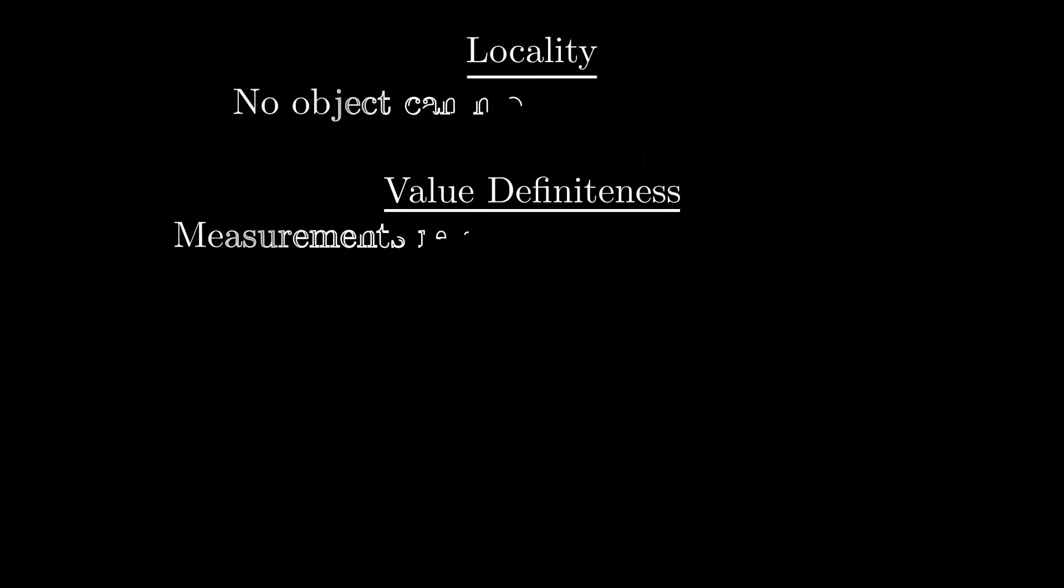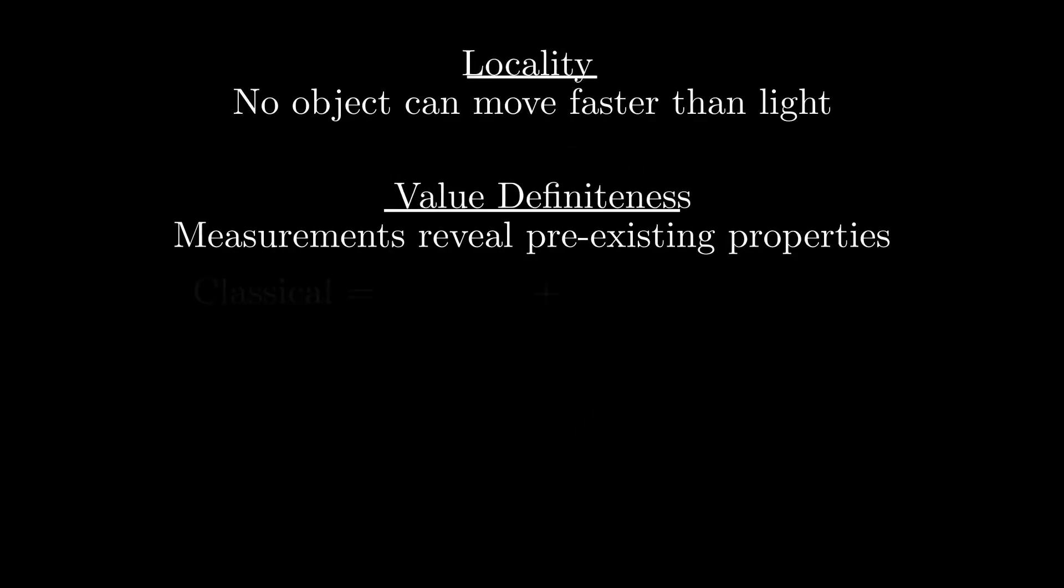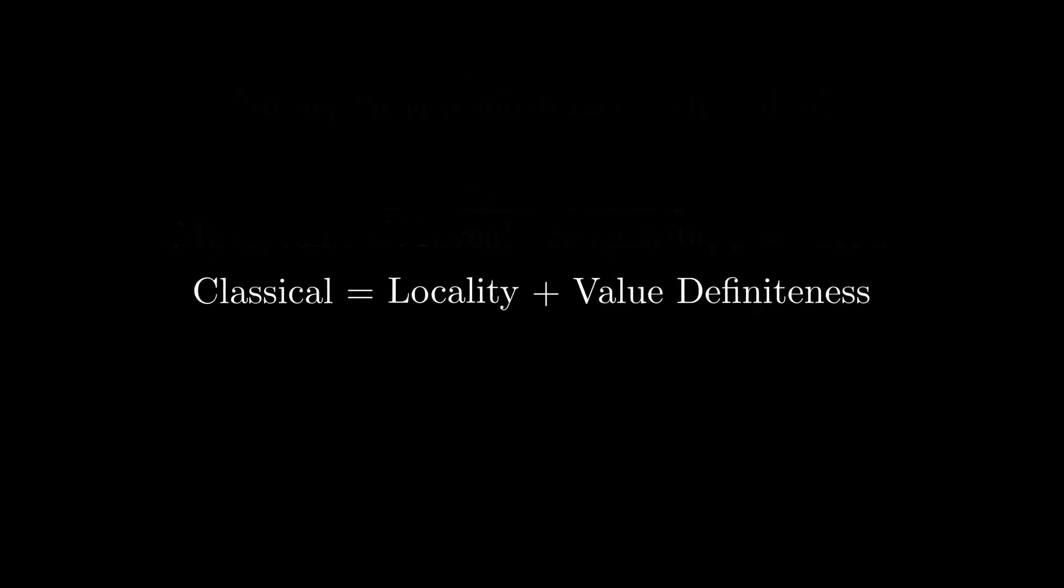So, classical physics is a shorthand for a theory that is both local and value-definite. Consider a device known as a Stern-Gerlach apparatus. The way that it works is that it's oriented in one particular direction, and when you place an electron into it, the electron will deflect either in that same direction, or in the opposite way.